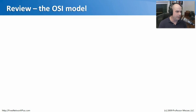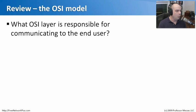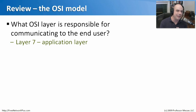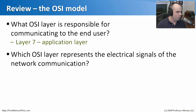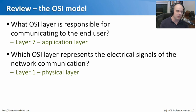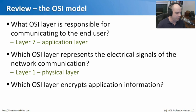Let's review some concepts from the OSI model with a few questions. Which OSI layer is responsible for communicating to the end user? That would be layer 7, the application layer — the only layer humans can actually see from the perspective of the OSI model. Which layer represents the electrical signals of network communication? That's layer 1, the physical layer.